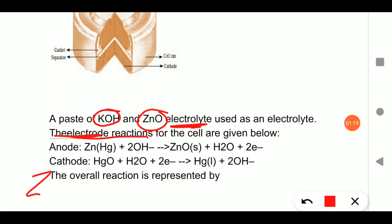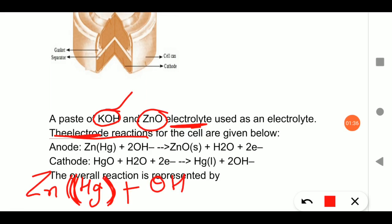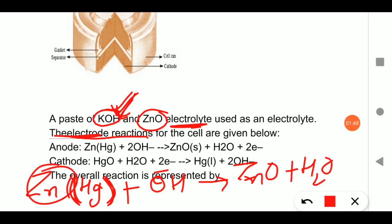At the anode, zinc is present but since mercury is added, it forms a zinc amalgam. The zinc amalgam takes two OH⁻ ions from KOH (the electrolyte). This results in the formation of zinc oxide (ZnO) and water, and the zinc loses two electrons. If the electrolyte is consumed, the voltage begins to drop — but the mercury cell has a special property: it gives constant voltage throughout its life.